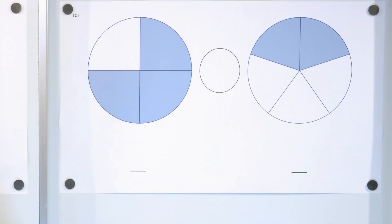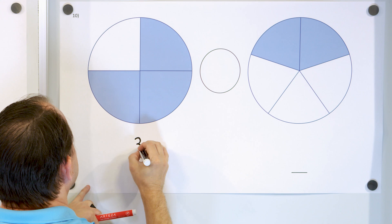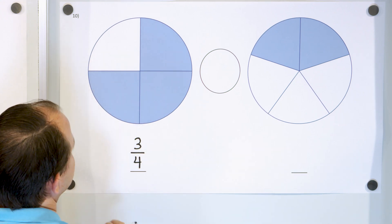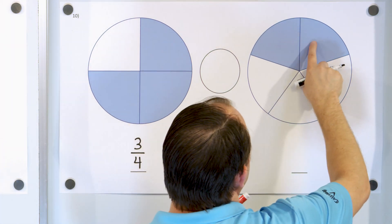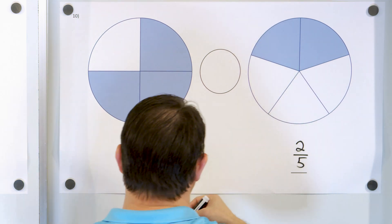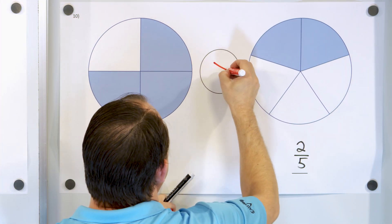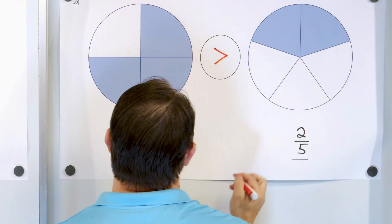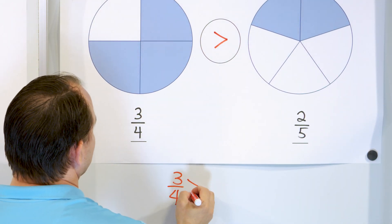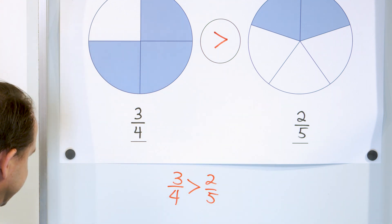For our last one — what fraction do we really have here? We have 1, 2, 3 out of 4 pieces total — so 3 fourths. And here we have 1, 2 out of 3, 4, 5 — so 2 out of 5 pieces total, so 2 fifths. The smaller amount is 2 fifths, so the arrow always points to the smaller amount. We say 3 fourths is greater than 2 fifths.